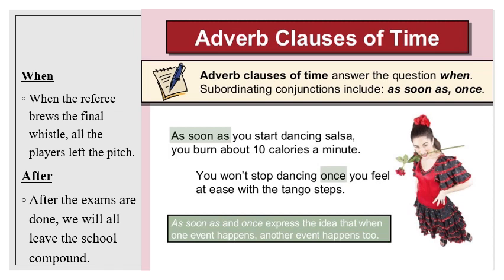The next type is adverbial clauses of time. They answer the question 'when.' Subordinating conjunctions include: as soon as, once, when, and after. For example: 'As soon as you start dancing salsa, you burn about 10 calories a minute.' 'As soon as you start dancing salsa' is the dependent clause initiated by the subordinating conjunction 'as soon as.' 'You burn about 10 calories a minute' is the independent clause. There is a comma between them since the dependent clause came at the beginning.